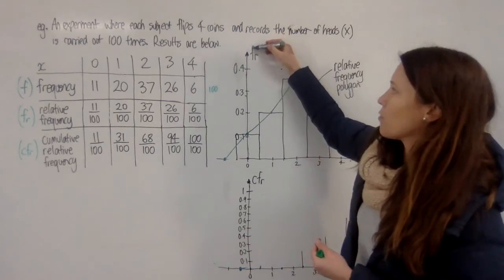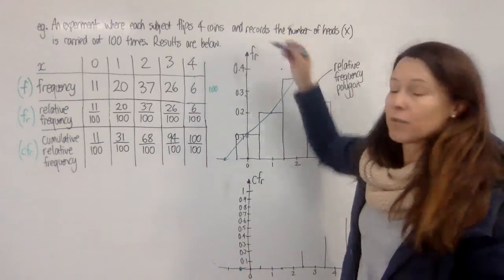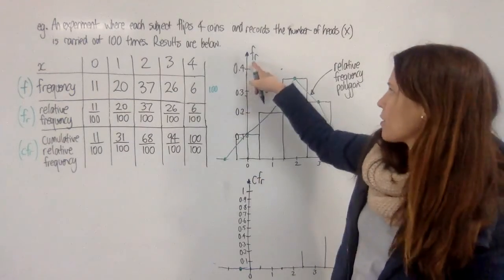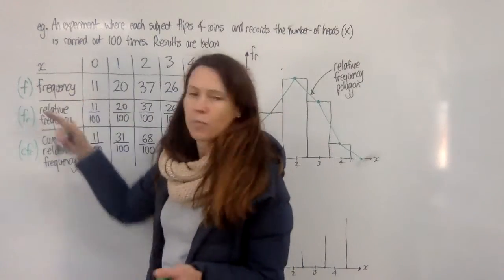Now, relative frequency is written frequency with a little r there for relative. So if you think of it as frequency relative, it will remind you that the symbol has the r actually after the f, which is a little confusing. Frequency, we just put an f.